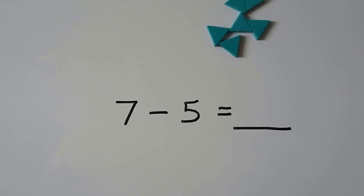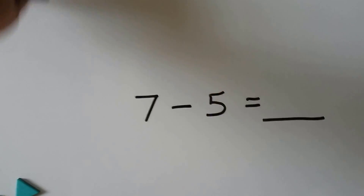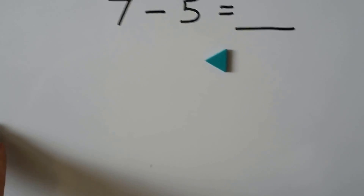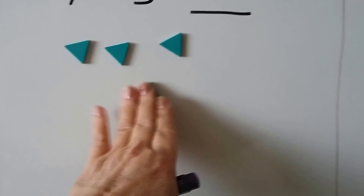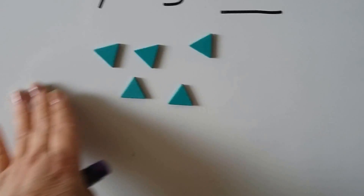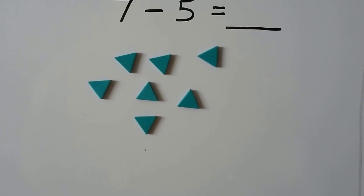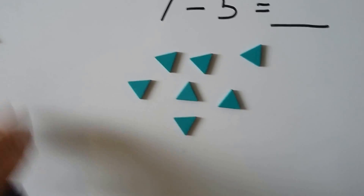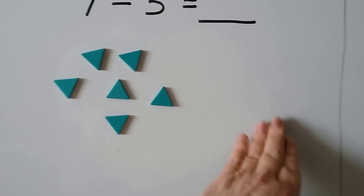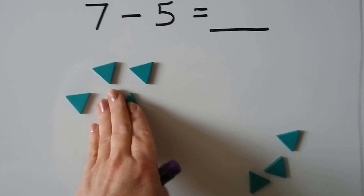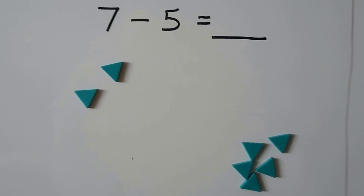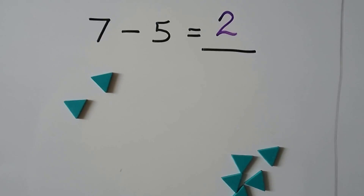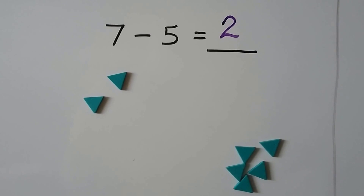Seven minus five. We can use the same counters. We need seven counters: one, two, three, four, five, six, seven. We need to take away five: one, two, three, four, five. How many are left? One, two. Seven minus five is equal to two.